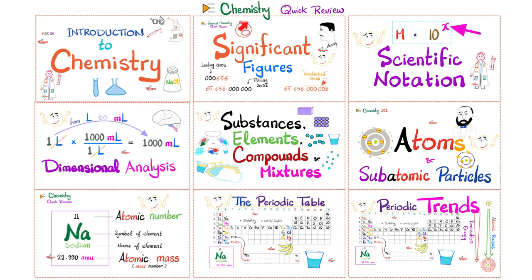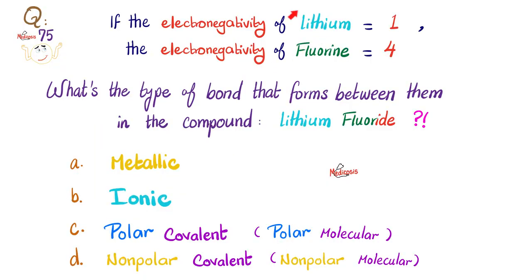Please watch the videos in this chemistry quick review playlist in order for maximum understanding and retention. Let's answer the questions of the previous video. If the electronegativity of lithium is 1 and the electronegativity of fluorine is 4, what's the type of bond that forms between them in lithium fluoride? Please pause and try to answer this yourself.